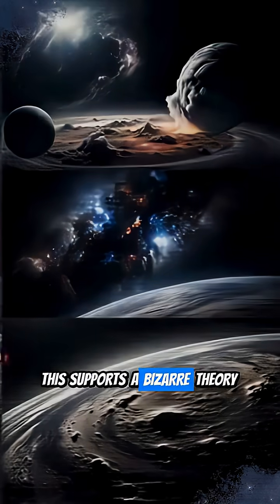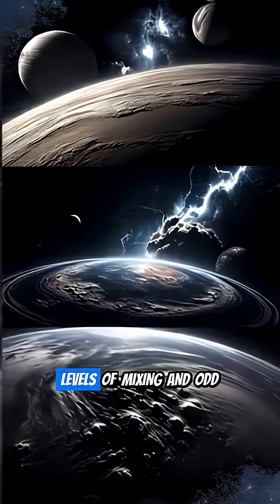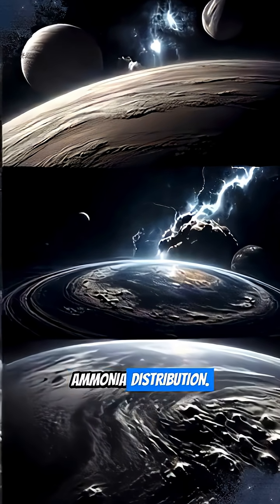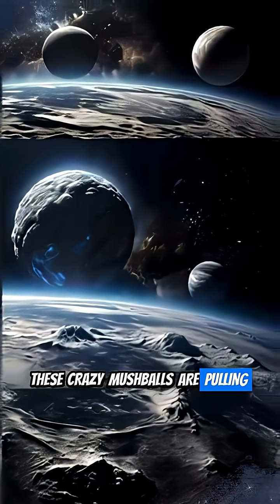This supports a bizarre theory explaining why Jupiter's upper atmosphere has surprisingly poor levels of mixing and odd ammonia distribution. Basically, these crazy mush balls are pulling the ammonia down.